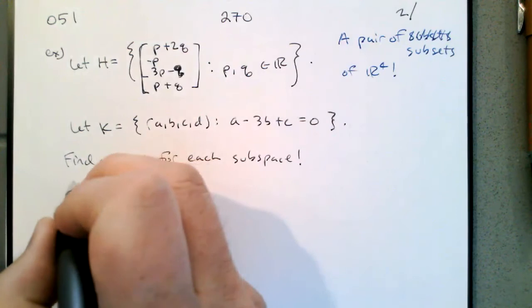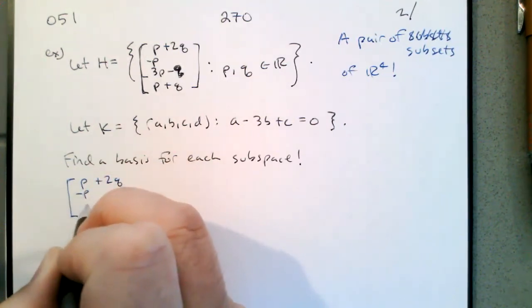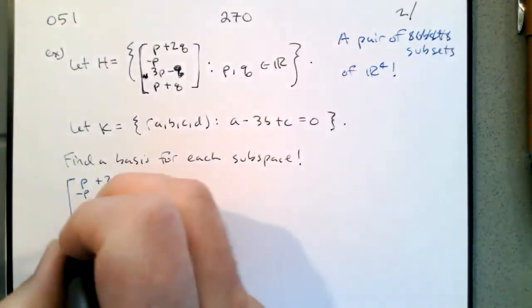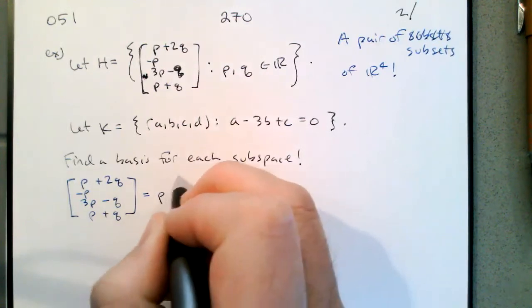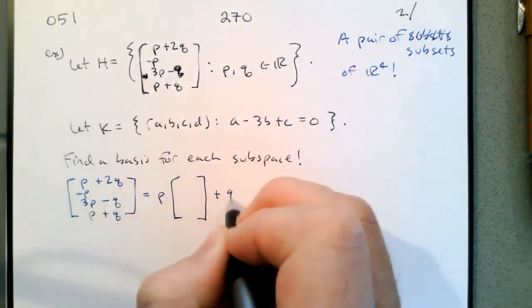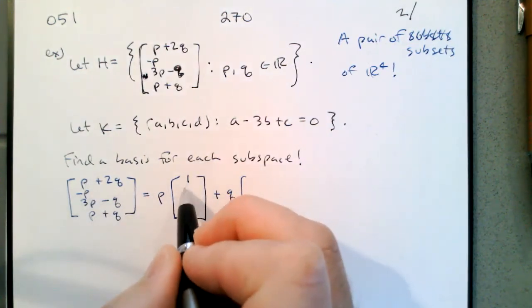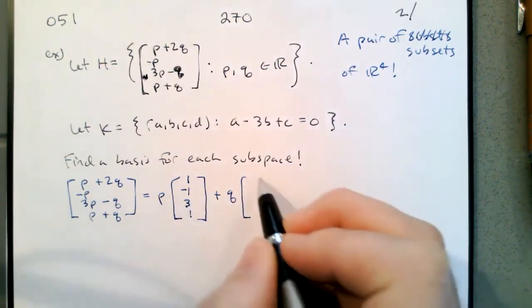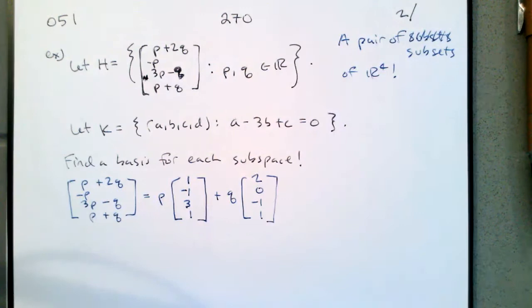For H, an element of H has entries p plus 2q, negative p, 3p minus q, and p plus q. What we're going to do is write a p vector and a q vector to get our spanning set. The p vector looks like 1, negative 1, 3, 1. And the q vector looks like 2, 0, negative 1, 1.